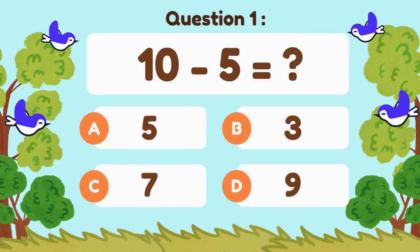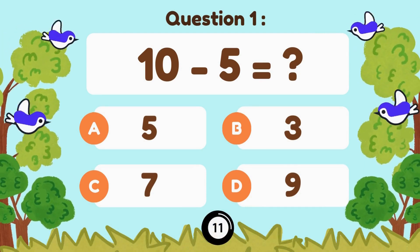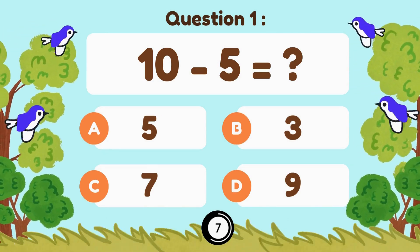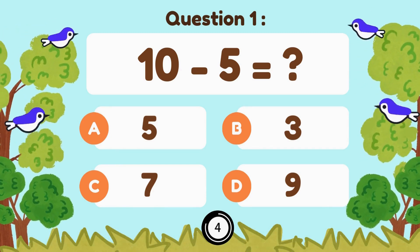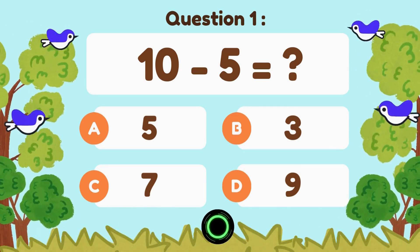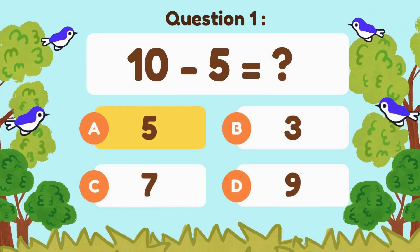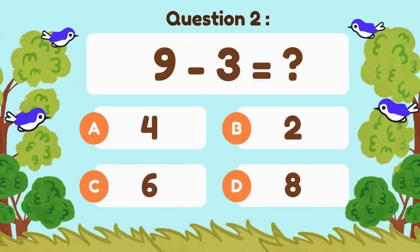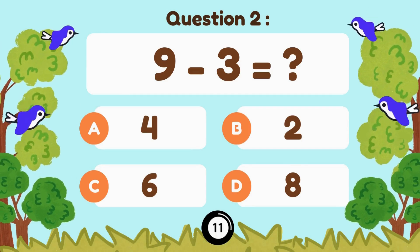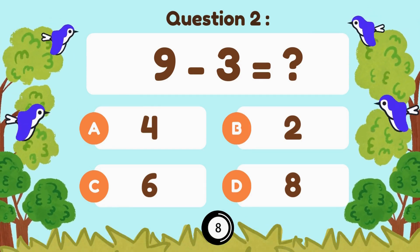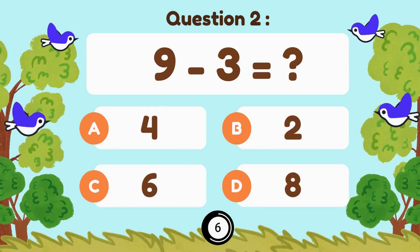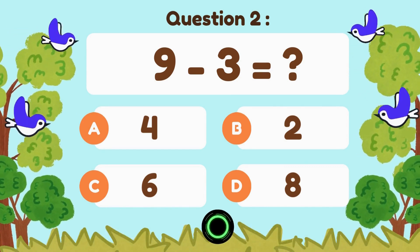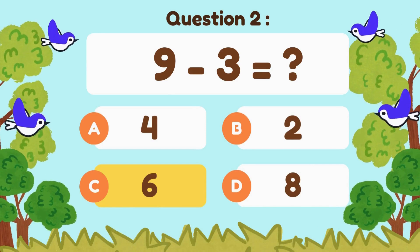10 minus 5... 10 minus 5 is 5. 9 minus 3... 9 minus 3 equals 6.